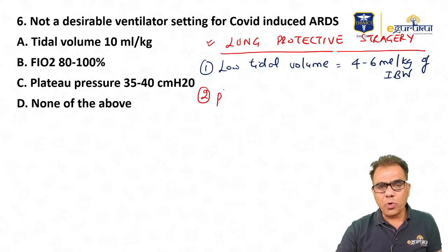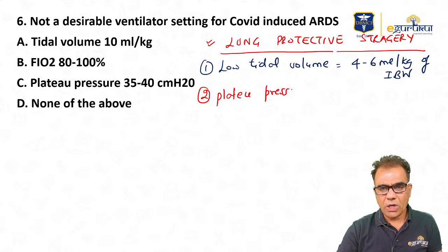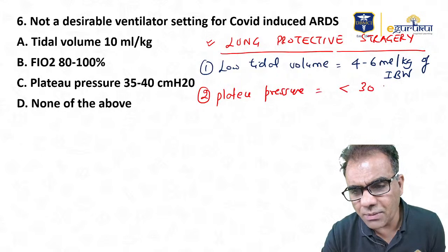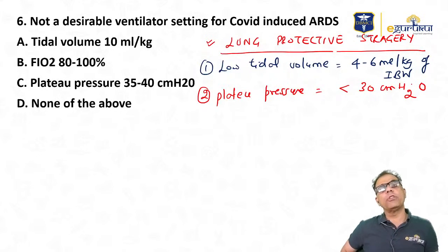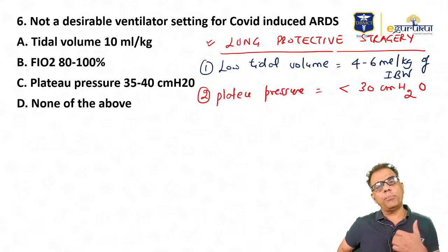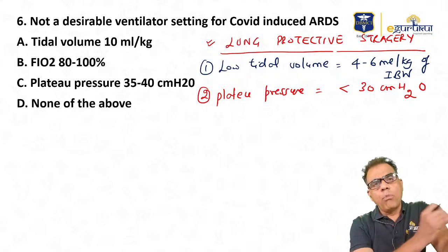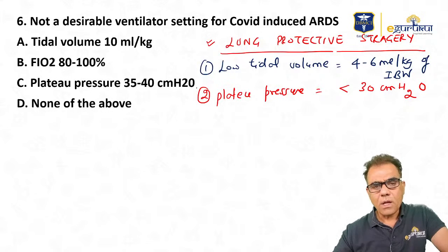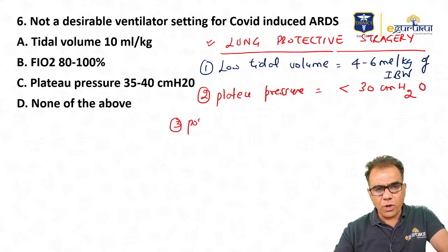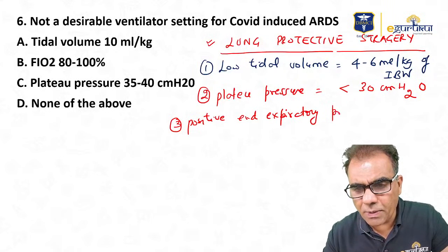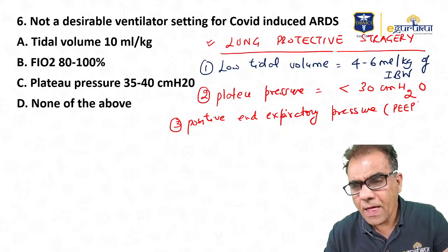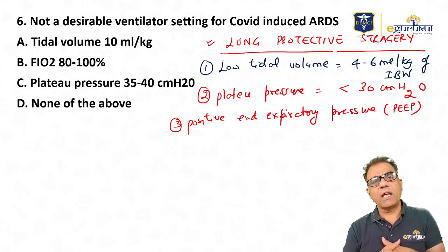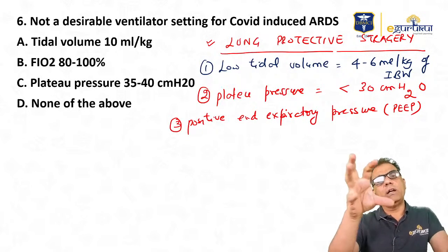The second component is plateau pressure, which should be less than 30 cm water. We choose plateau pressure because it reflects alveolar pressure. The third component is PEEP — Positive End-Expiratory Pressure. As the name suggests, we give positive pressure at the end of expiration so that alveoli do not collapse during expiration. Start at a minimum of 5 cm water and titrate.